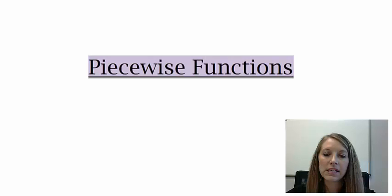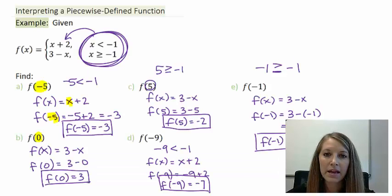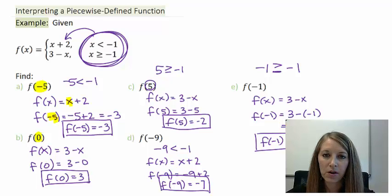Working with piecewise functions — in the last video I introduced them, showed you what they look like, and gave you a real-life example. I started by interpreting a simple piecewise function, meaning if we had to evaluate it at a certain point, we would know how to do that. We figure out which interval it fits into first, and then substitute into that corresponding piece. So now that we know how to interpret piecewise functions, the next thing we need to do is figure out how to graph them.